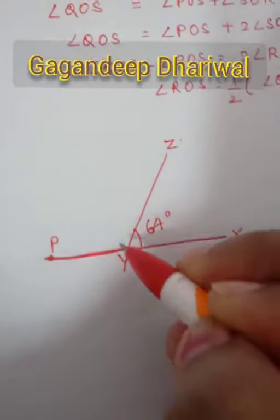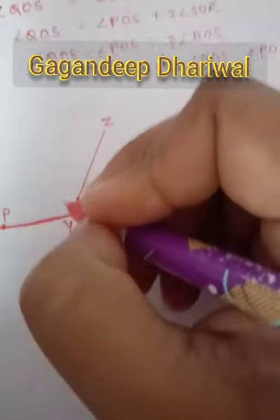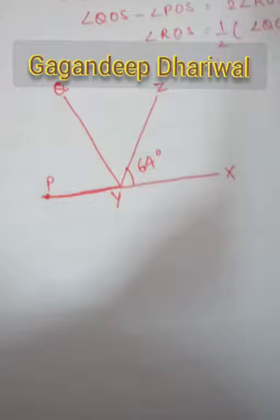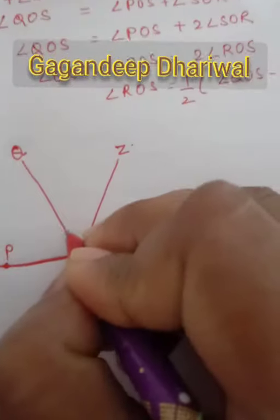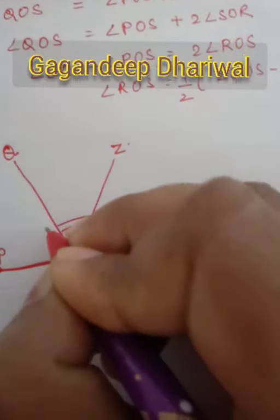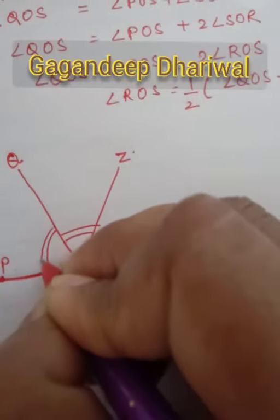Now draw figure from the given information. If ray YQ bisects angle ZYP, so this is ZYP and YQ bisects this. Bisect means divide this into two equal parts. Okay, this is your YQ. Bisect means this divided into two equal parts.